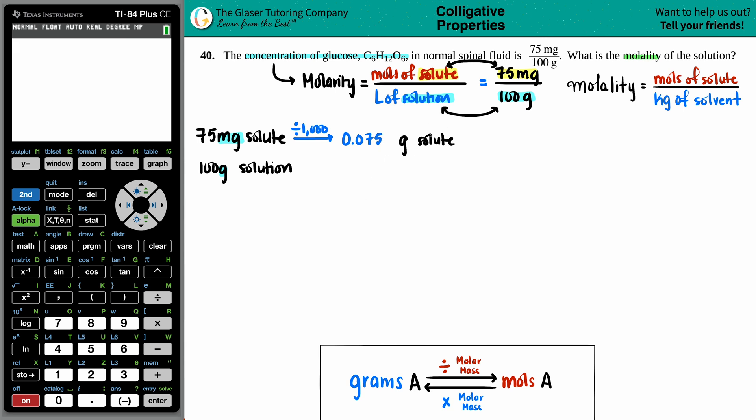Okay, now we have 0.075 grams of the solute and 100 grams of the solution. Well, how much solvent do I have?